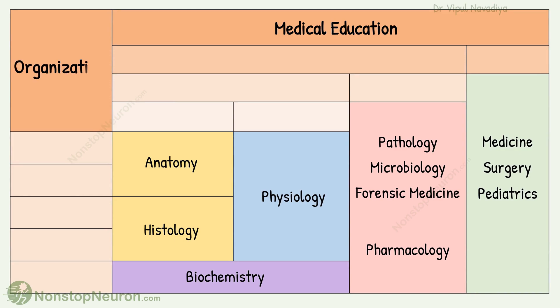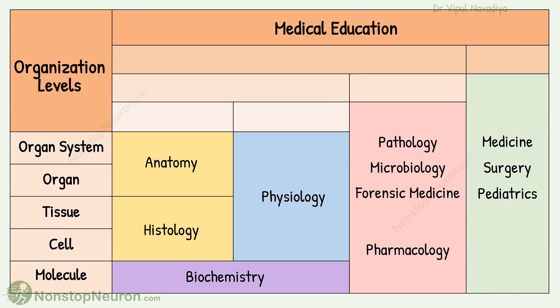The structural organization of our body includes these levels: organ systems, organs, tissues, cells, and molecules.